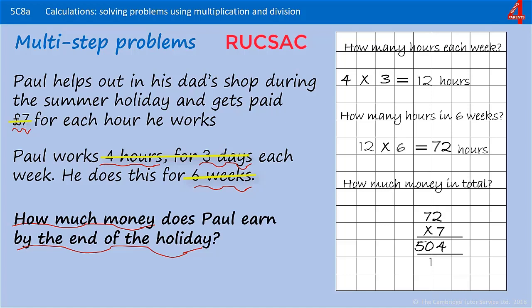Paul is paid seven pounds, so the calculation is 72 multiplied by seven, which is 504. How much money does Paul earn by the end of the holiday? He earns 504 pounds altogether. Use the rucksack acronym to make sure you are doing everything and check that you have answered the question that was asked — how much money, not how many hours or how many weeks.